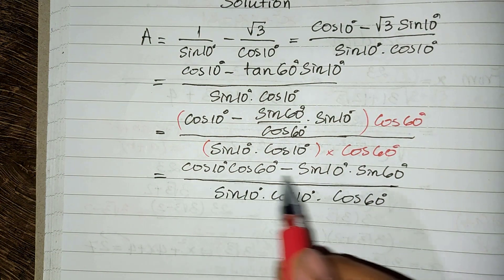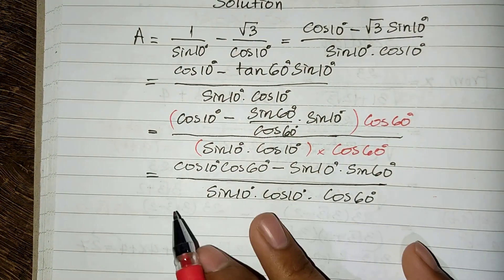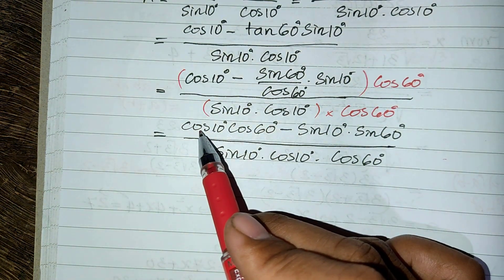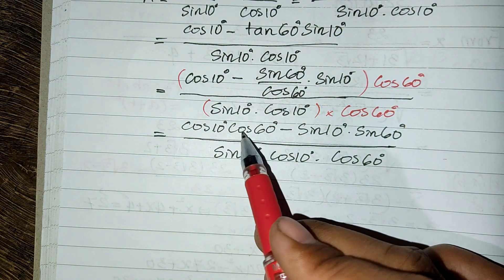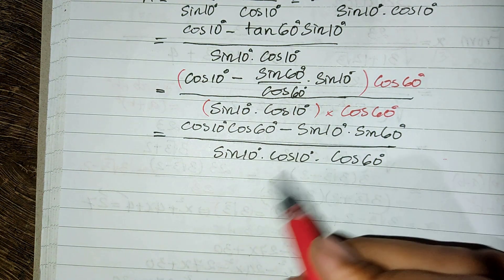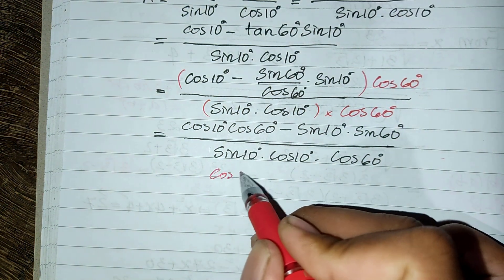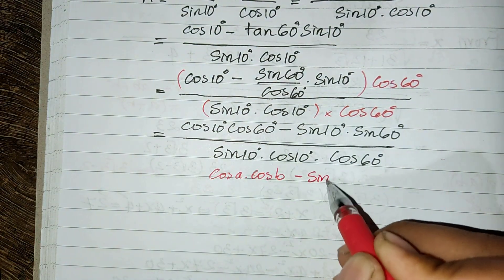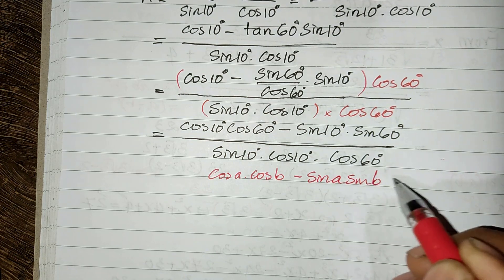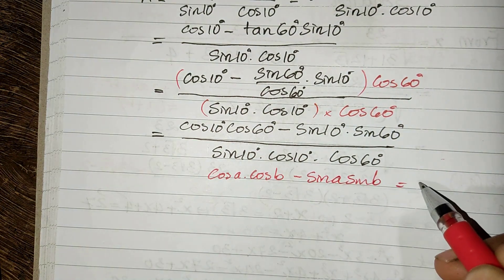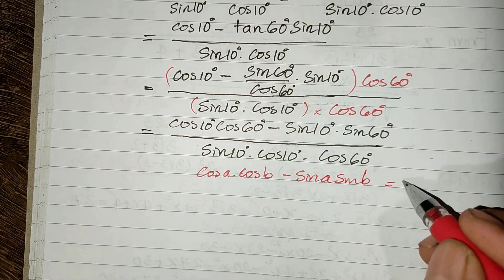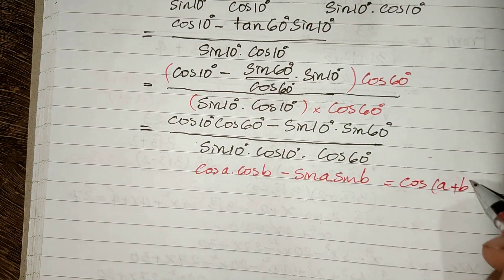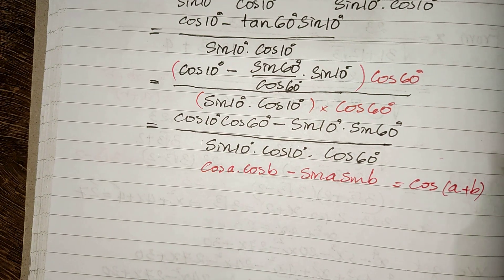Now I can use the formula. The formula is: cosine of A multiplied by cosine of B minus sine of A multiplied by sine of B equals cosine of A plus B.